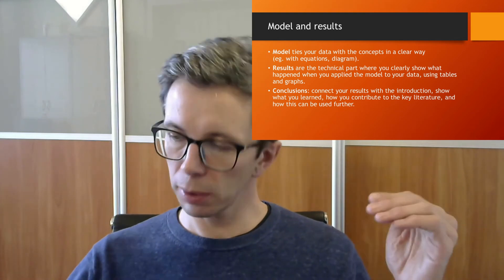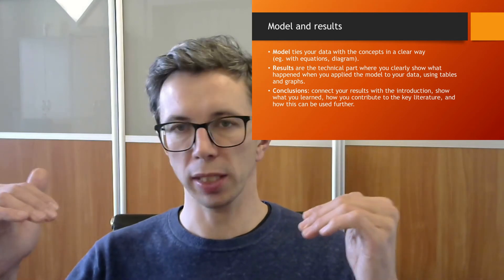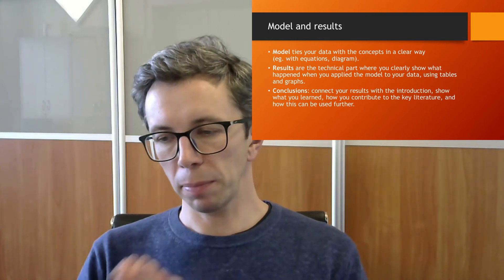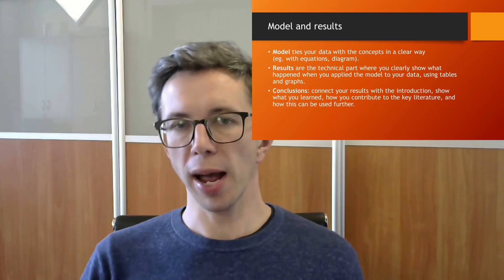The next thing you will need in your paper is a model and results. When I say model, I mean something connecting the data and the theory — it doesn't necessarily need to be equations, although that's good. It could also be a diagram or flowchart that speaks specifically to what you expect to see in your data. Your results are technical because they show the results of applying data to your model — there should be graphs and tables. Then when you connect those results to the question you asked in the introduction, you reach your conclusions: what have you learned, how do you contribute, and how can this be used further?